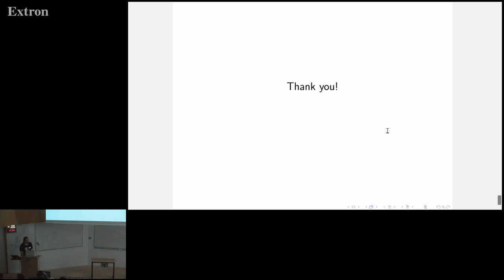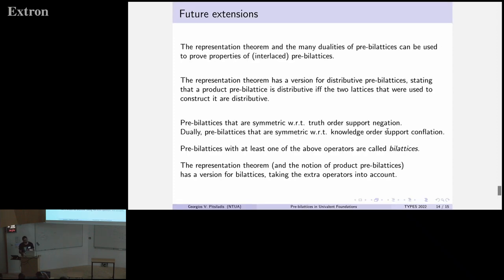What is a bi-lattice? So you've talked about pre-bilattices. A bi-lattice is a pre-bilattice with negation, either in one of the two lattices or in both of them. Not all pre-bilattices can be bi-lattices. The symmetric ones are.